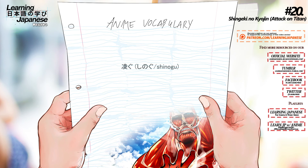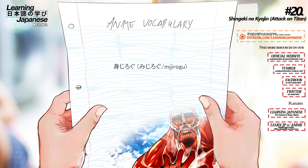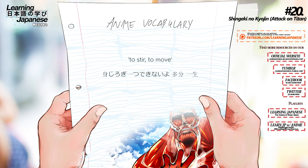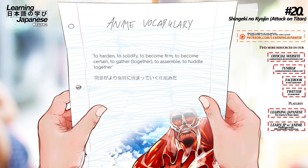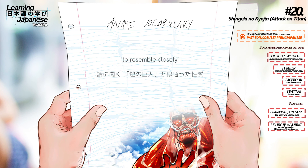凌ぐ (shinogu) — To endure, to keep out, to stave off, to pull through, to get over, to survive, to surpass, to outdo, to excel, to eclipse, to defy, to slide. 判る (wakaru) — To harden, to solidify, to be confirmed, to become certain, to assemble together. にかよう (nikaou) — To resemble closely.